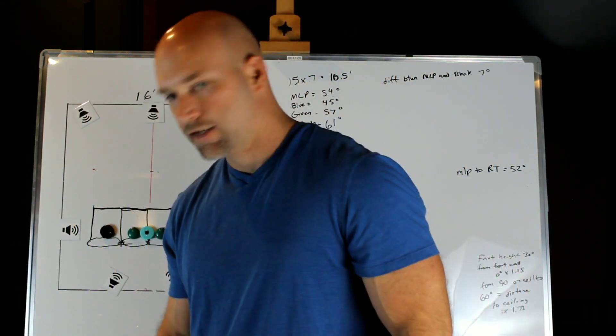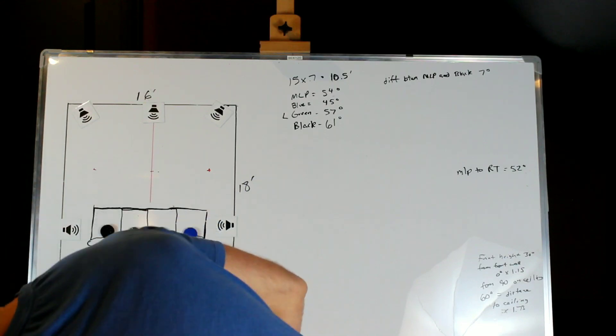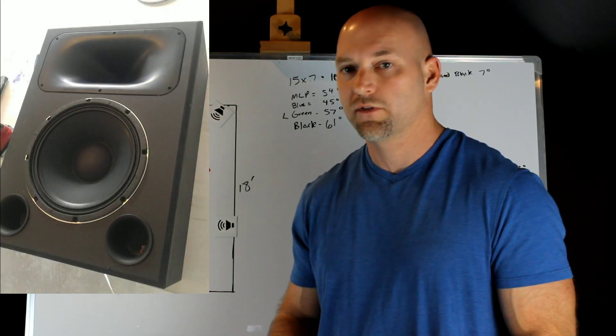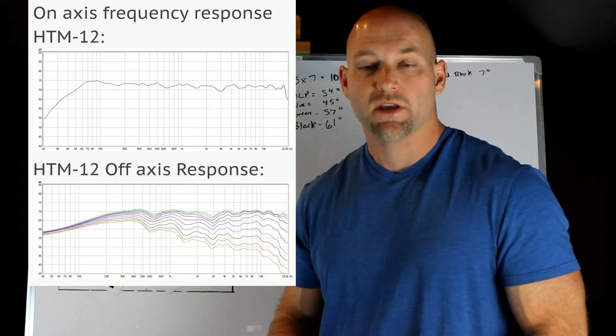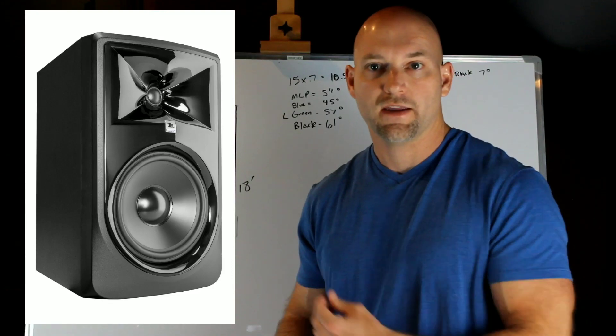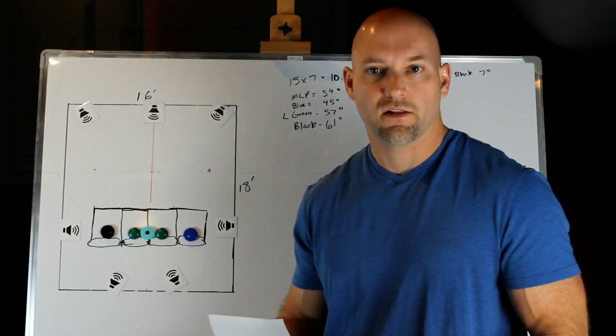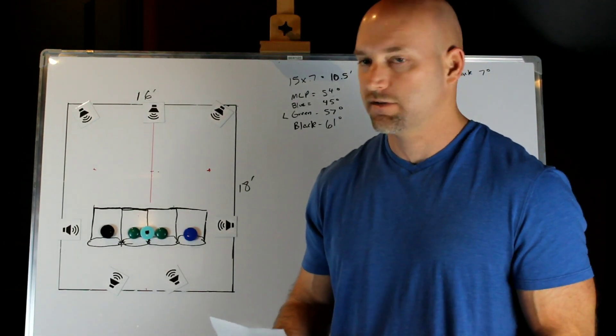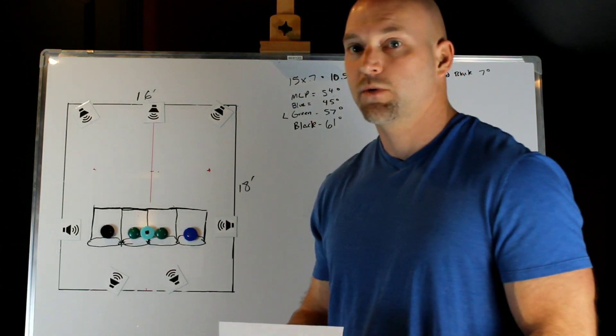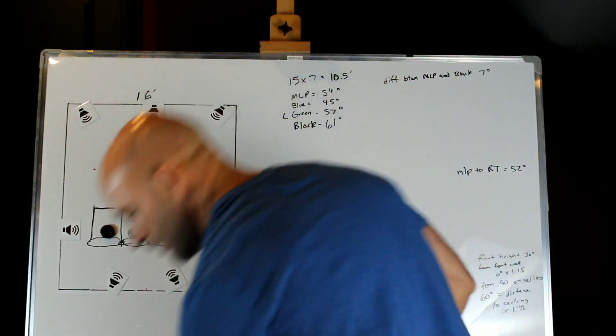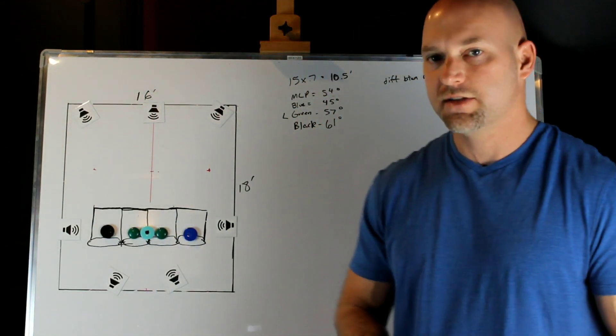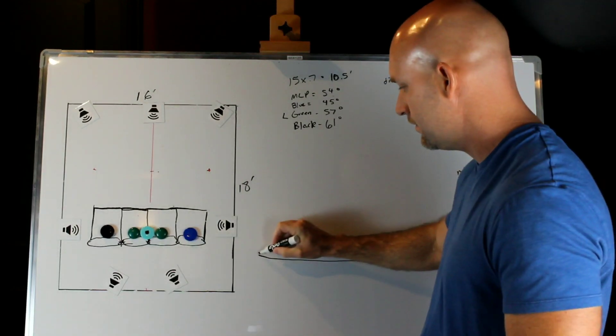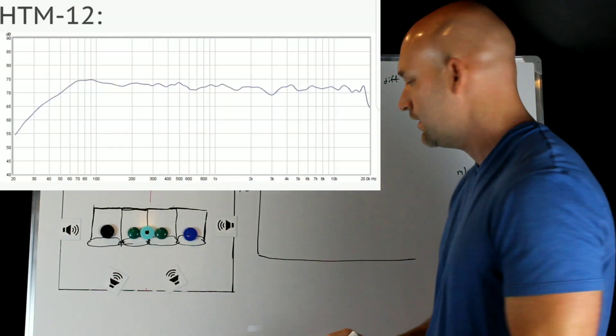You see here we have a popular DIY speaker, the HTM-12, and also JBL has some really nice speakers. Here's a 308, similar in waveguide technology to the M2, which is pretty much reference for studios. It's a very nice, extremely well-designed speaker. But before we hit that, we're going to explain how to read these graphs.